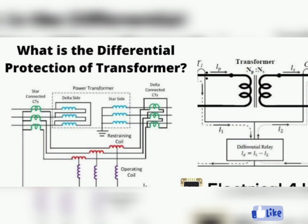Differential protection. This type of protection compares the current flowing into a transformer with the current flowing out of the transformer. If there is a difference between the two, it is an indication of a fault and the circuit is opened to protect the transformer.